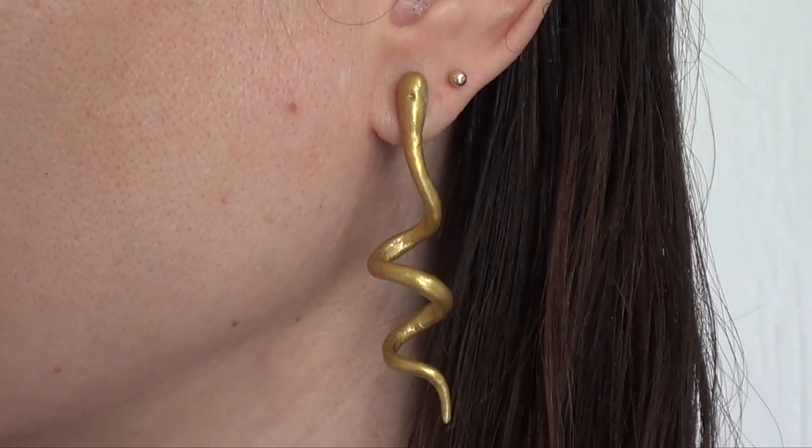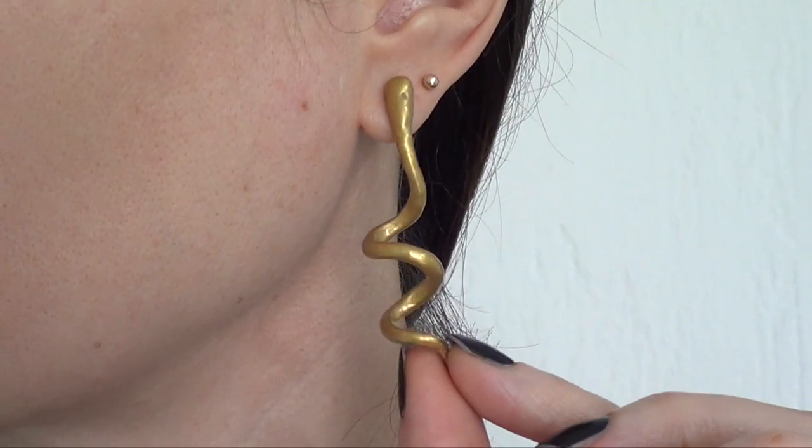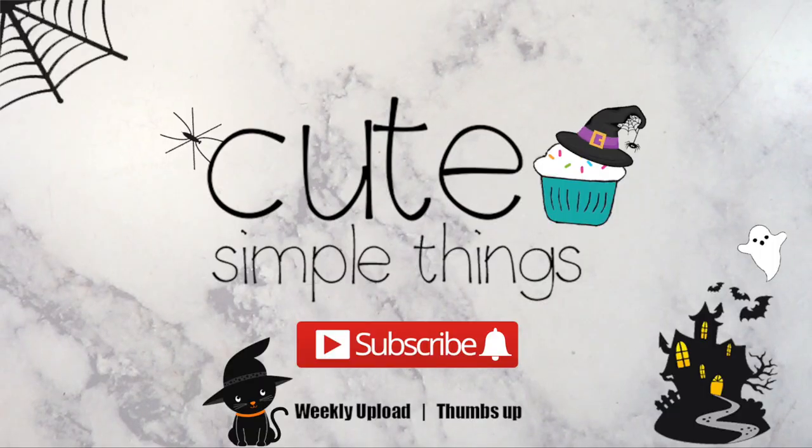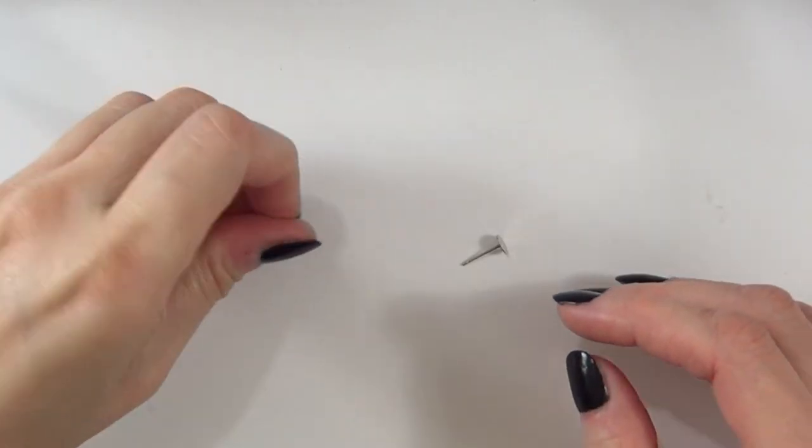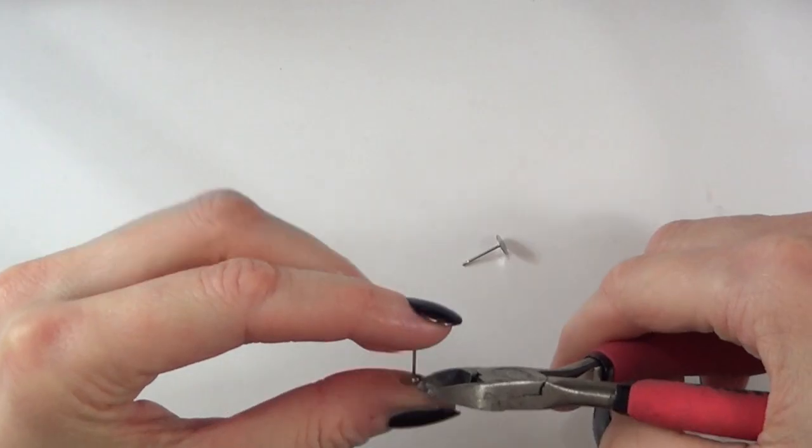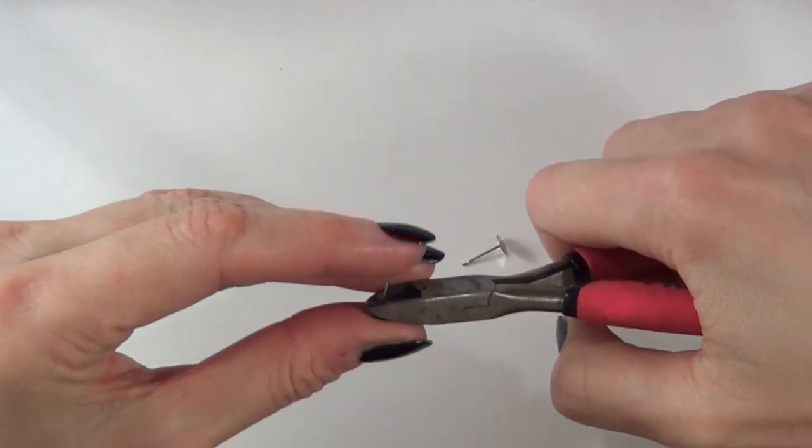Hey guys, it's Renee. Welcome to Cute Simple October. Today we're going to be making some snake earrings. The first things we need are a couple of ear posts, and I'm just going to cut that part of them.